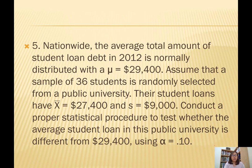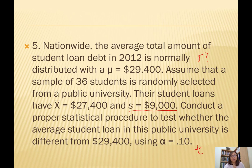Question 5 says the average total student loan debt in 2012 is normally distributed with mu of $29,400. A sample of 36 students is randomly selected from a public university; their x-bar is $27,400 and the standard deviation of the estimated population is $9,000. Conduct a proper statistical procedure to test whether the average student loan at this university is different from $29,400 using alpha of 0.1. We have mu, x-bar, and the estimated standard deviation — but the standard deviation of the population is missing, so we would do a t-test.